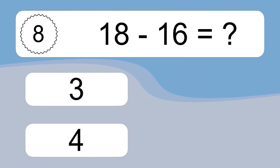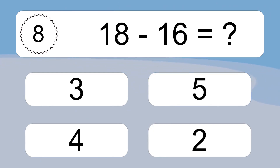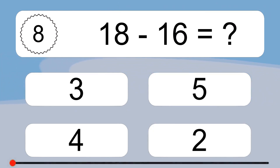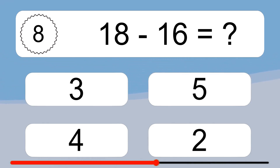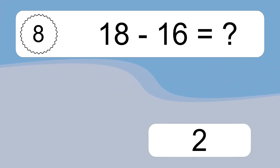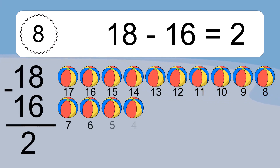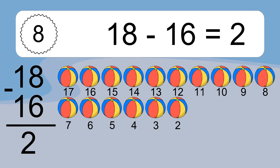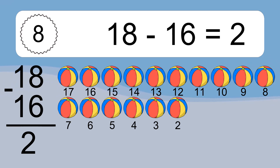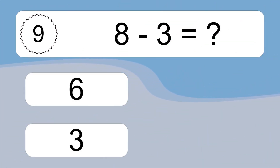18 minus 16 equals what? 18 minus 16 equals 2. Let's count it. 18, 17, 16, 15, 14, 13, 12, 11, 10, 9, 8, 7, 6, 5, 4, 3, 2. 8 minus 3 equals what?